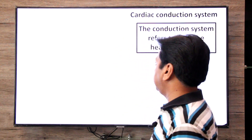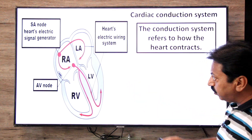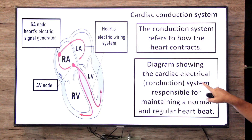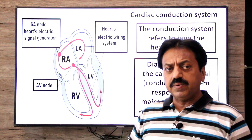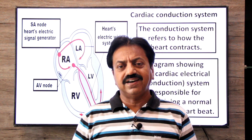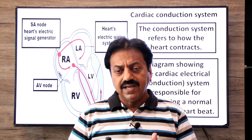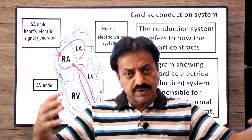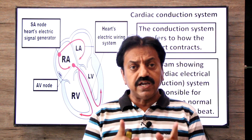Now look at this diagram, dear students. This diagram shows the cardiac electrical conduction system, responsible for maintaining a normal and regular heartbeat. You can think of it as the heart's electrical wiring system — it not only generates electrical signals to maintain the heartbeat, but also spreads them to the different chambers. There are 5 components of the cardiac conduction system.